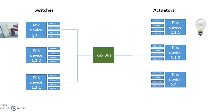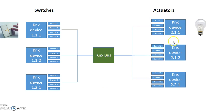When you're programming these devices, you're using this individual address. Here I've got three switches, all with a slightly different individual address, and they're linked to three different actuators, all with differing individual addresses.